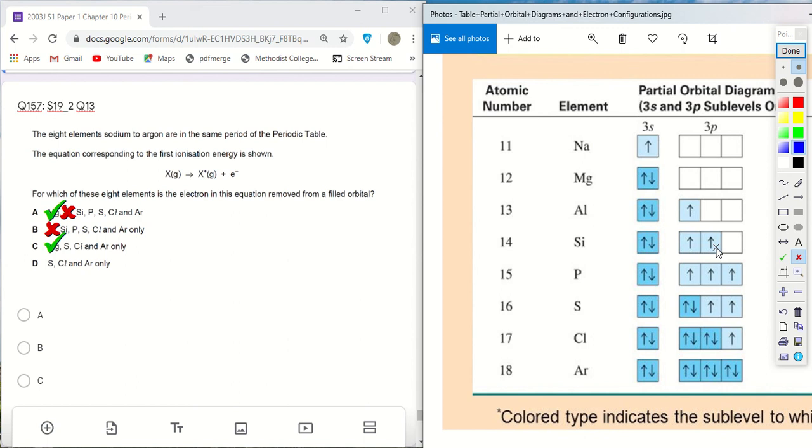Then let's look at silicon. Silicon also cannot because the first electron is removed from a 3p orbital. It could be from 3px or 3py, but both are not filled.